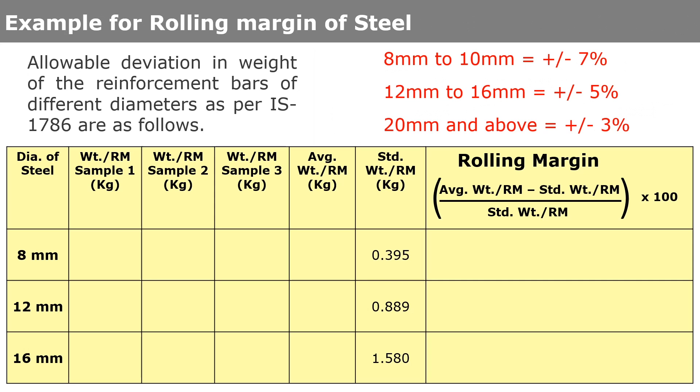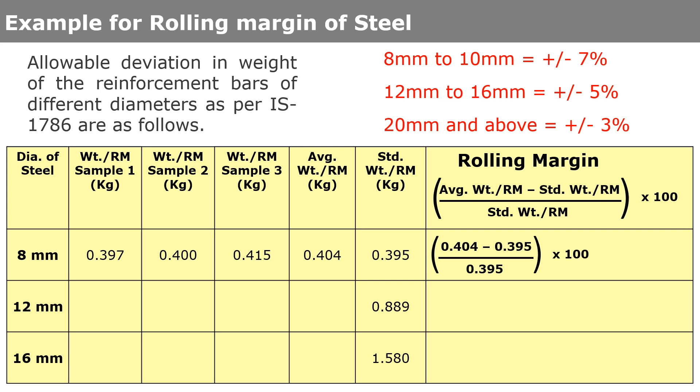For the 8 mm samples, suppose we got 0.39 kg, 0.40 kg, and 0.415 kg weight per meter length. We calculate the average weight as 0.404 kg per meter. For 8 mm bar, the standard weight per meter is 0.395 kg per meter. We can calculate the standard weight using the formula d²/162.